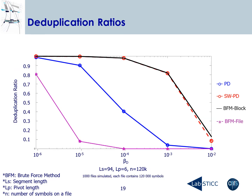In this figure, we observe the deduplication ratios obtained during simulations. We performed 1000 simulations using files containing 120k symbols, a segment of length 94 and pivots of length 6. We observe that the SWPD algorithm in red drastically outperforms the PD algorithm in blue, by 50% or even 80% in some cases depending on the parameters. Also, the deduplication ratios of SWPD are close to the brute-force method block algorithm in black, with much less computation.